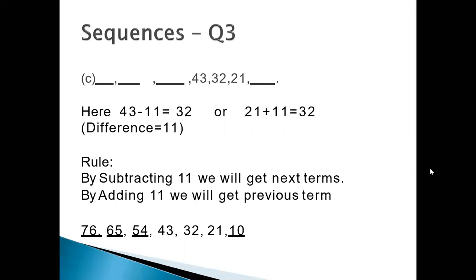To get the last missing term: 21 minus 11 gives 10. The rule is your choice — subtracting 11 gives next terms in descending order, and adding 11 gives previous terms. The given terms give us the clue: 43 is the number from which, by adding 11, we get the three missing terms at the beginning, and by subtracting 11 we get the last term.